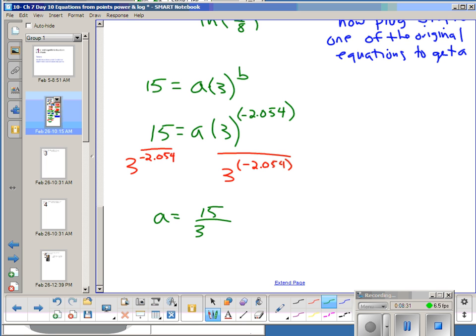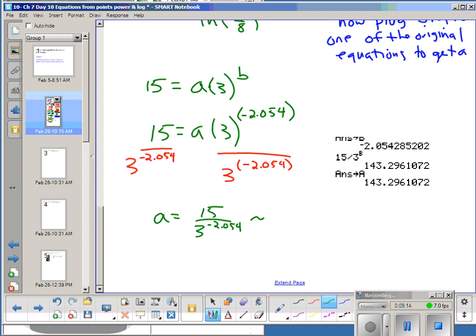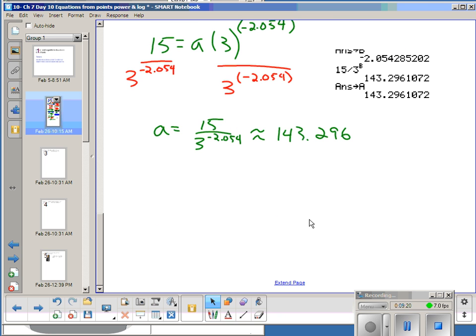Now again, I want to solve for A. So to undo, I'm going to divide A by 3 to the negative 2.054. That's a number. And if I do it to one side, I have to do it to both sides. So there's my answer for A. A is now 15 over 3 to the negative 2.054. And I can do this again on my calculator. So I'm going to take 15 and divide by 3 to the... And here's where I could use my answer button. Or I have B in there. I'm going to use my B button. Because that's going to give me the exact answer. And there's my A. And I'm now going to store that in alpha A. And again, you don't have to do this part. But I'm going to show you a cool trick, a way to check. So now I know that A is about 143.296. So I'm going to write my equation. Y equals A, 143.296, times X to the B power.